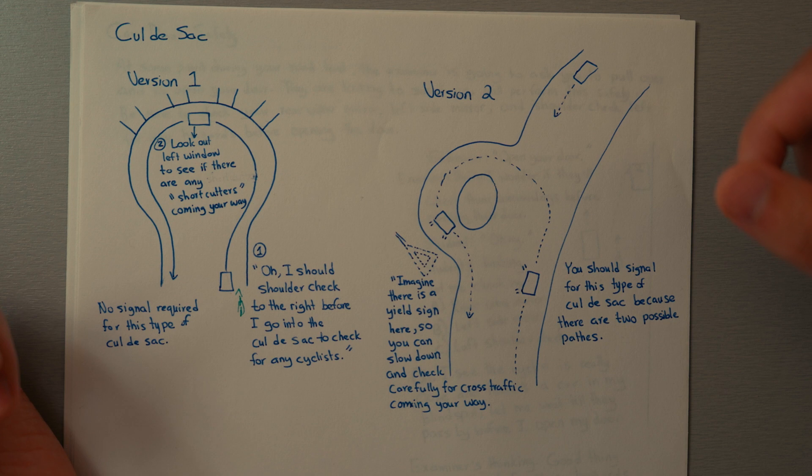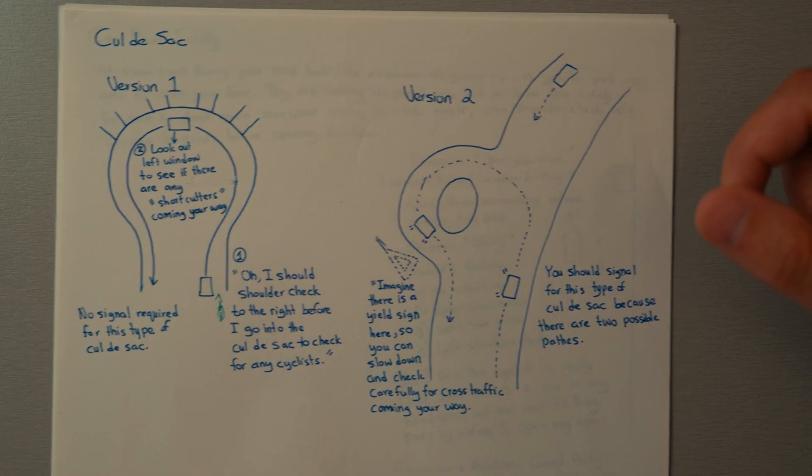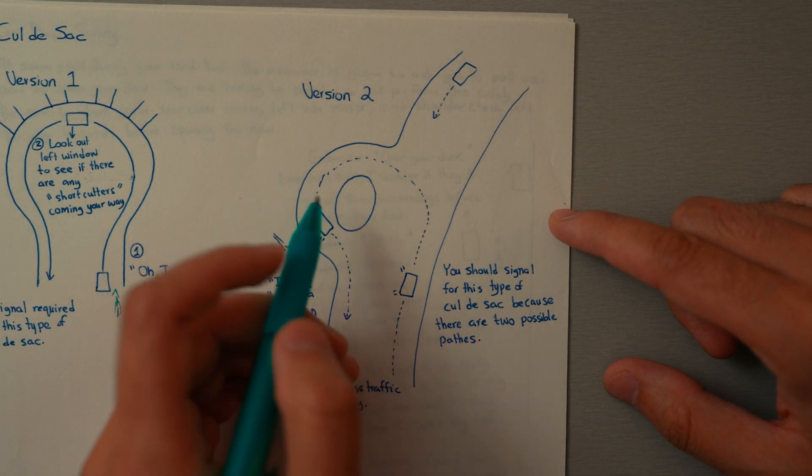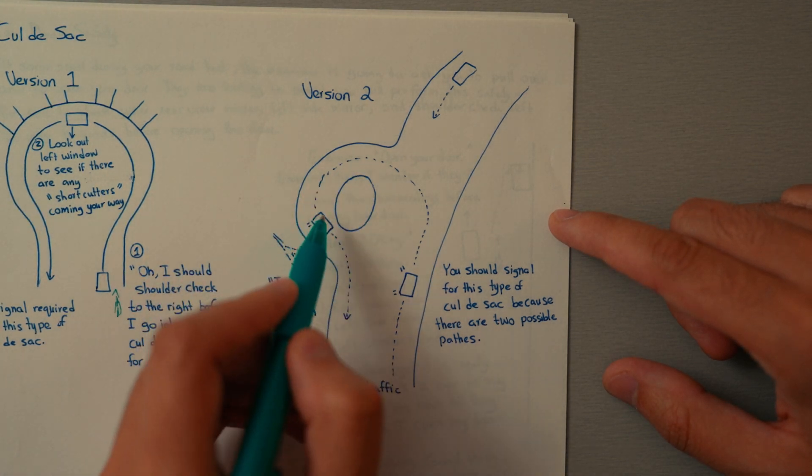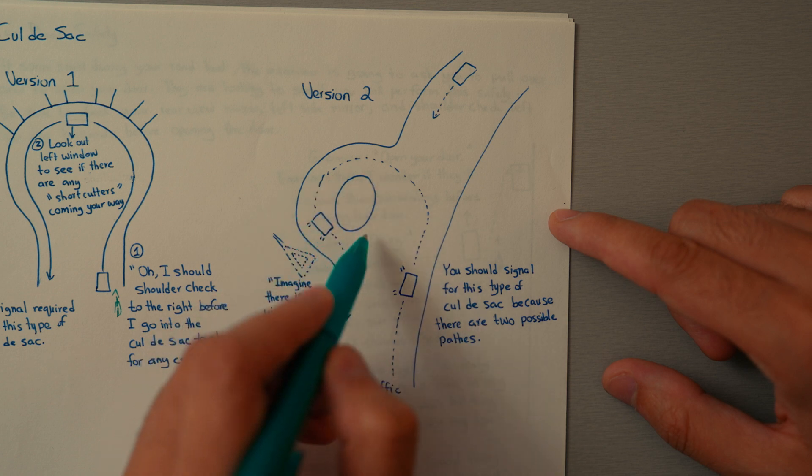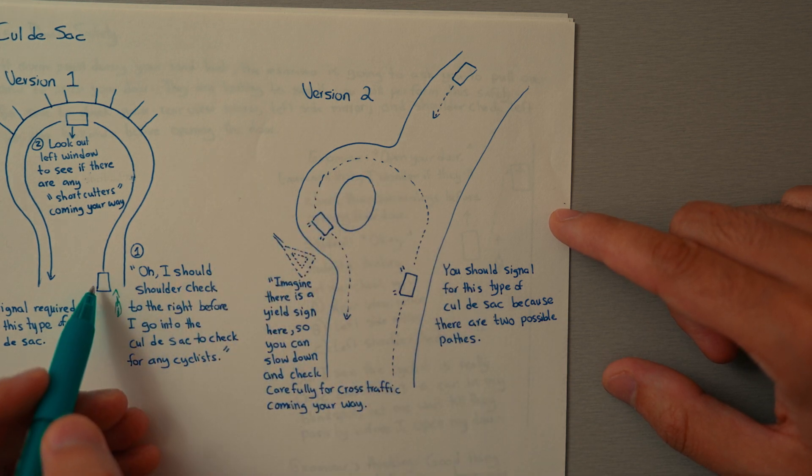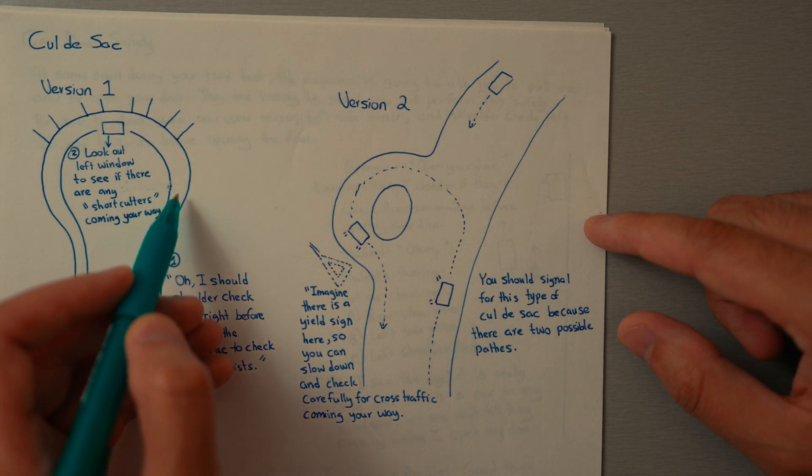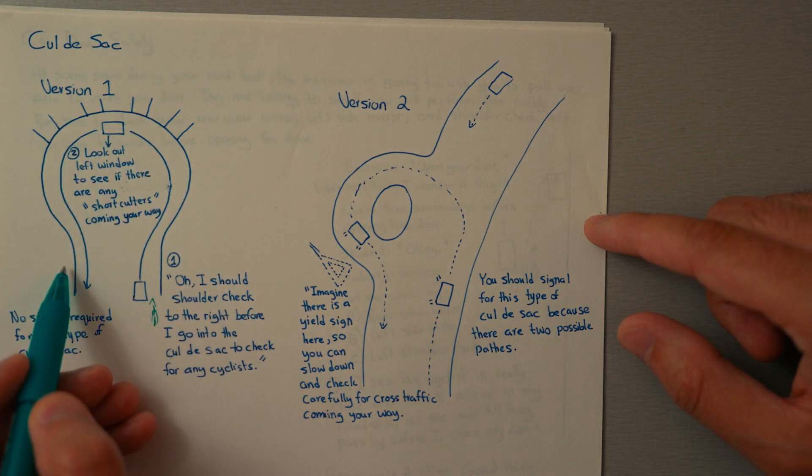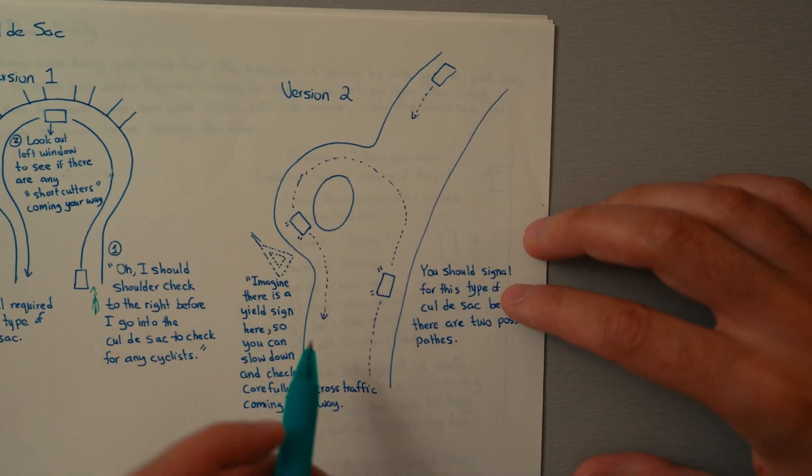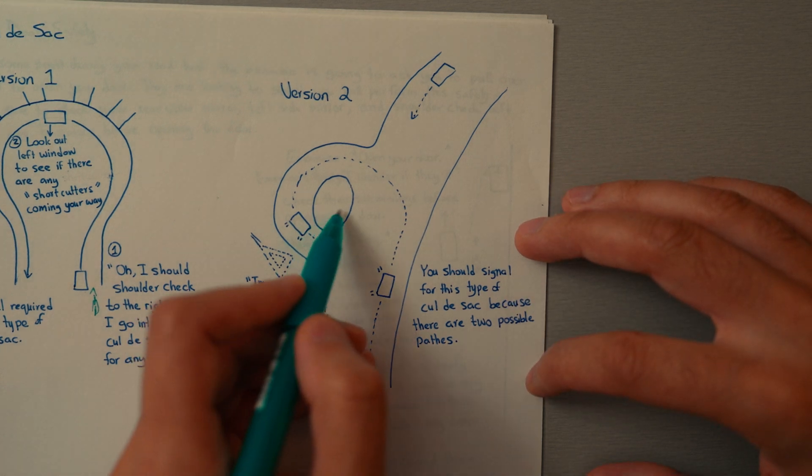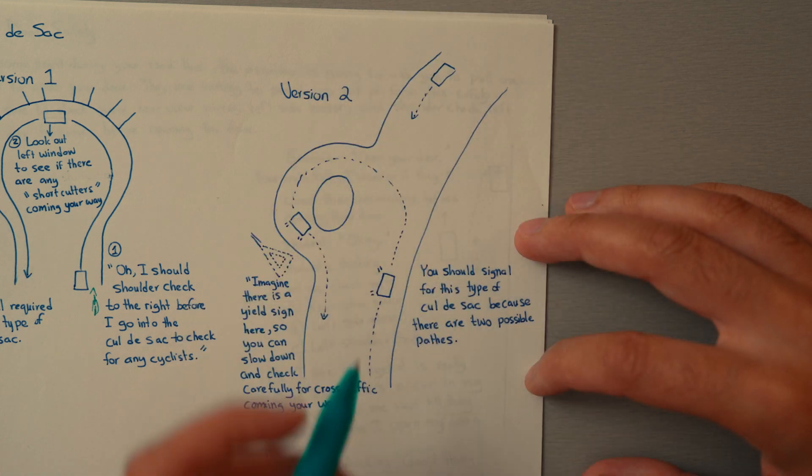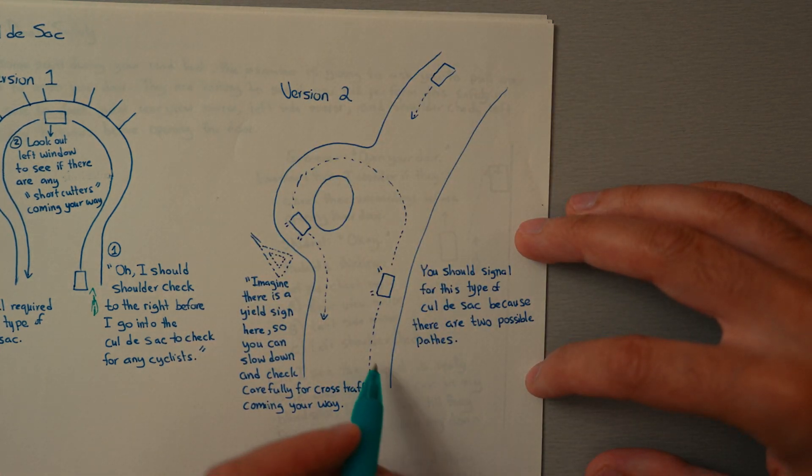The other type of cul-de-sac—it's not really a different type per se, but it's where it's positioned. In this case, it was at the end of a road and there's no other place you could go but to go around this cul-de-sac. Whereas this one, the cul-de-sac is on the side of a main road. Because you're making a left turn at an intersection...